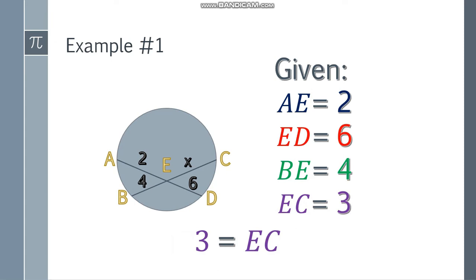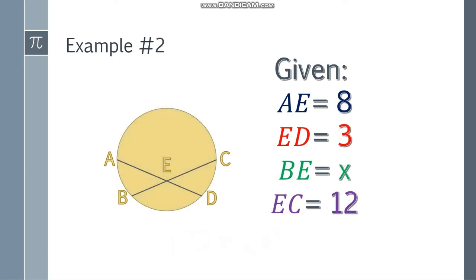Now let's have another example. What if we have a given like this one? AE is 8, ED is 3, BE is X, and EC is 12. So 8 here, 3, X, and 12.